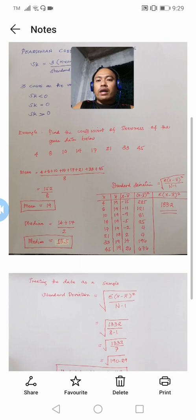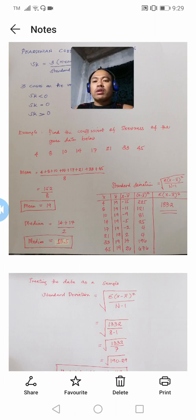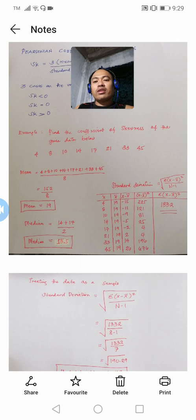If we want to apply the Pearsonian coefficient of skewness formula, we need to find the value of the mean, the median, and the standard deviation. For example, we want to find the coefficient of skewness of this given data: 4, 8, 10, 14, 17, 21, 33, and 45.